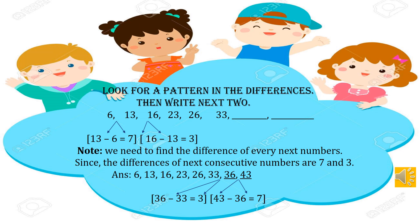Look for a pattern in the differences, then write the next 2 numbers. The sequence is: 6, 13, 16, 23, 26, 33, and so on. First, we find the difference of 13 and 6, which is 7. Then the difference of 16 and 13, which is 3. So the differences of consecutive numbers alternate between 7 and 3.